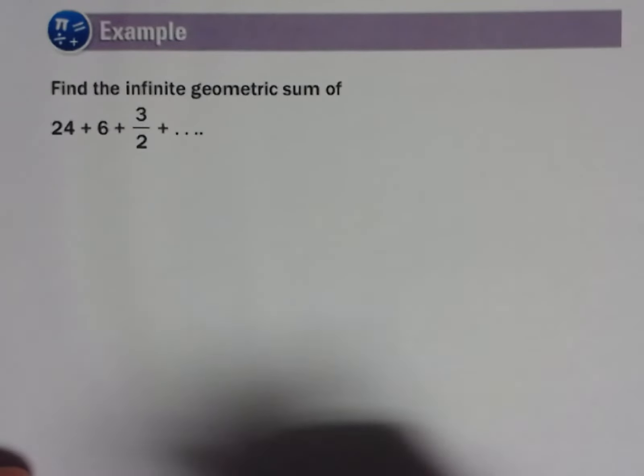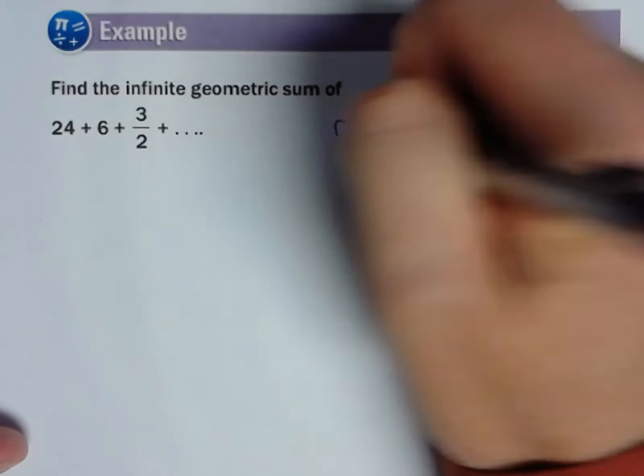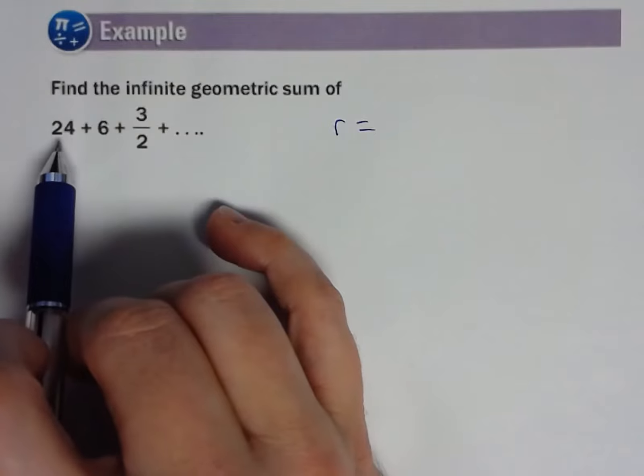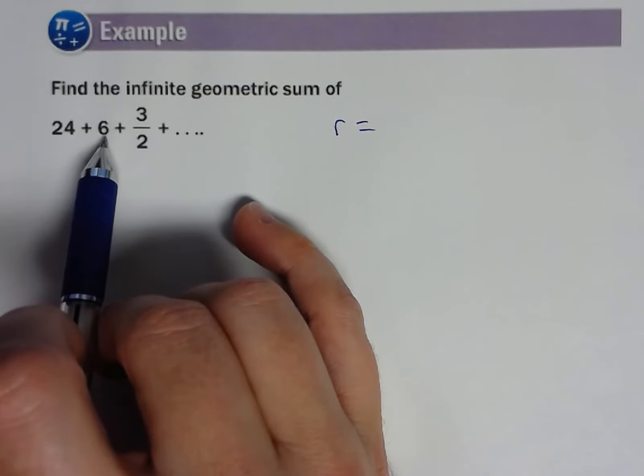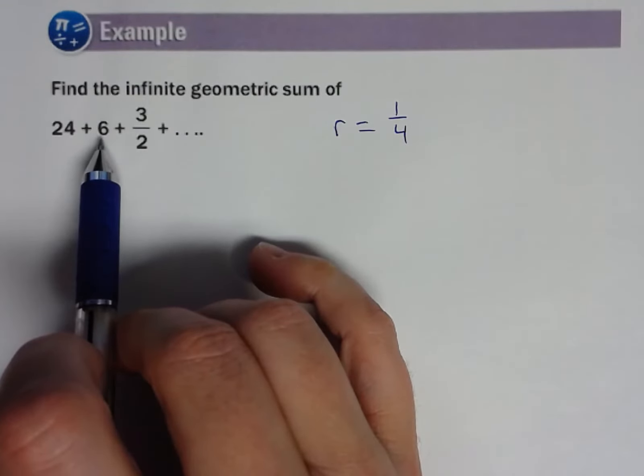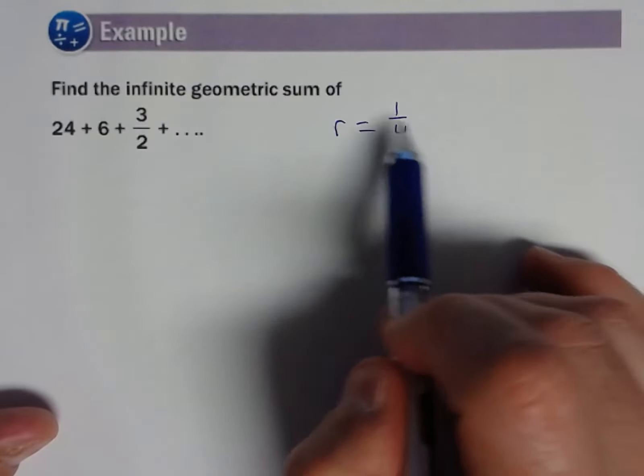We need to determine what our R is, so that absolute value of that ratio has got to be less than one. Well, 24 to 6, what do we do? 6 divided by 24, so R is 1/4. So 6 times 1/4 would be 3/2. So R is 1/4. This one qualifies.